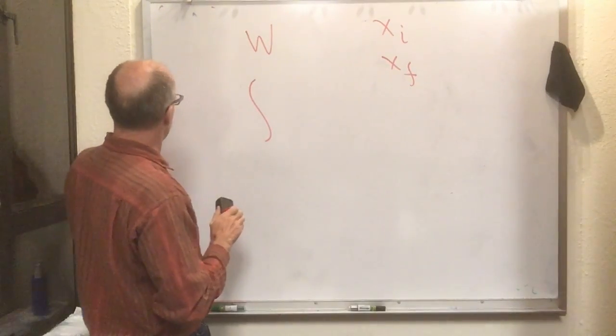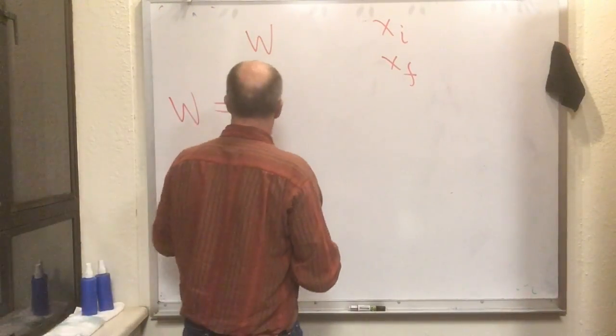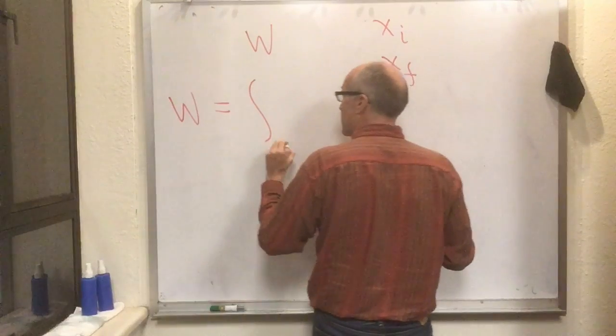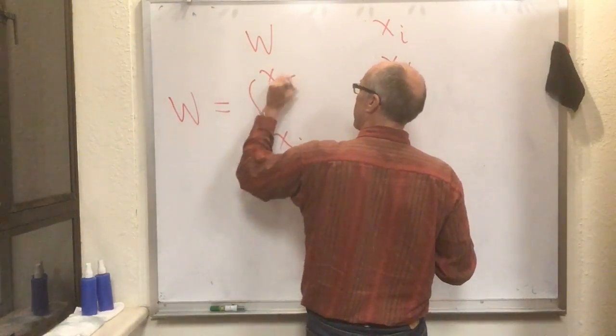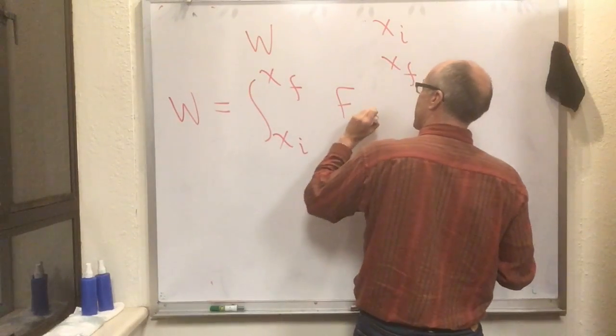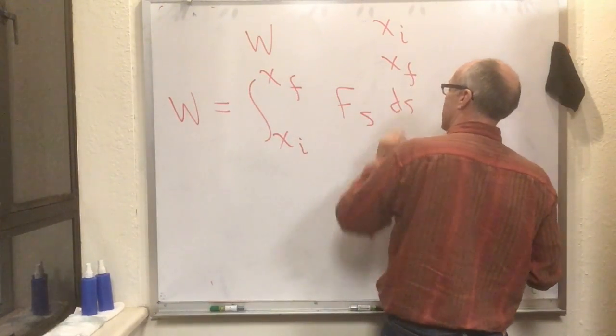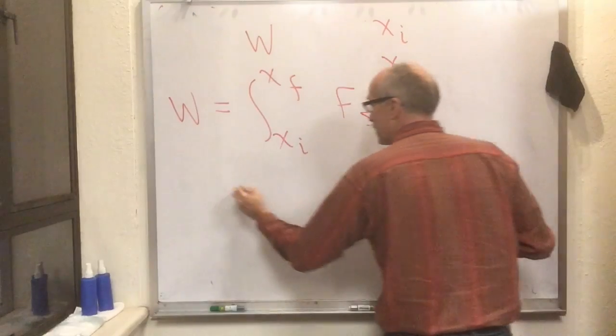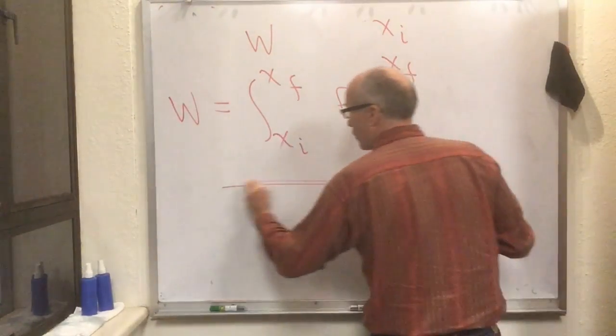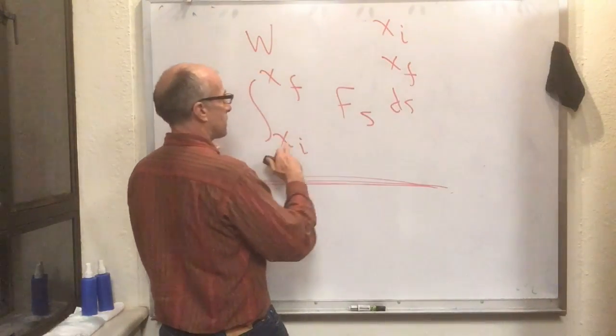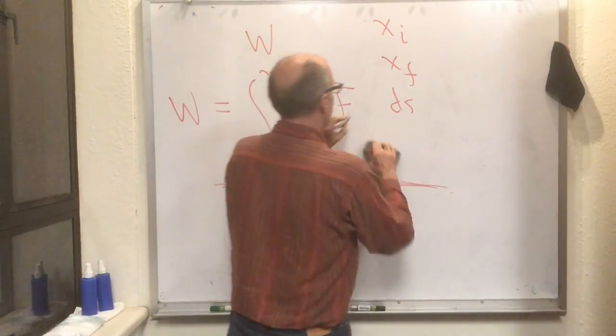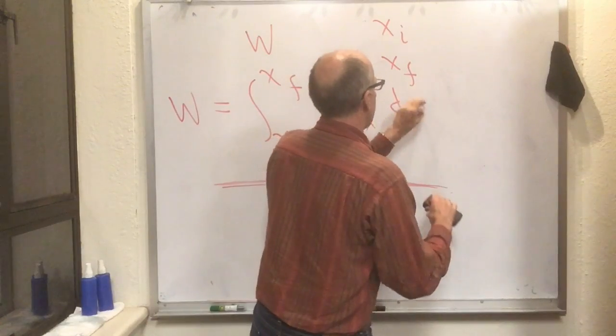We know that from the last flip video we got the general formula for work according to Knight, equation 9.10: the integral from the initial value to the final value of F in the s direction ds. But this spring is one of these situations where the only direction we worry about is the x direction, so this is the integral from x initial to x final of Fx dx.